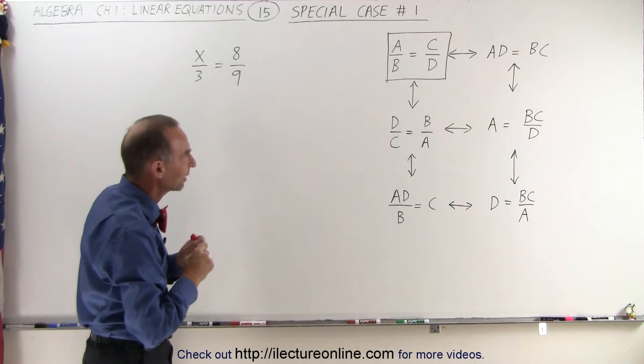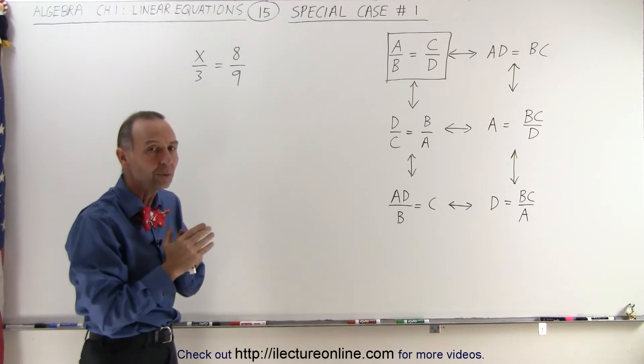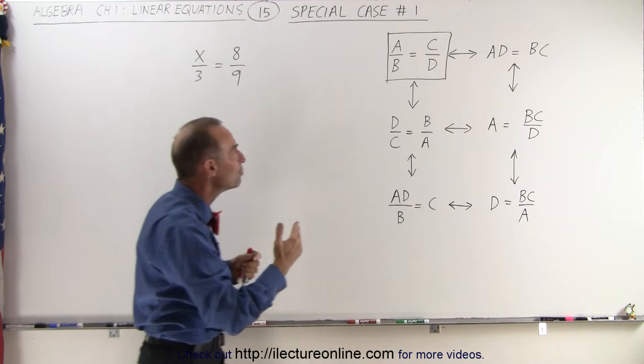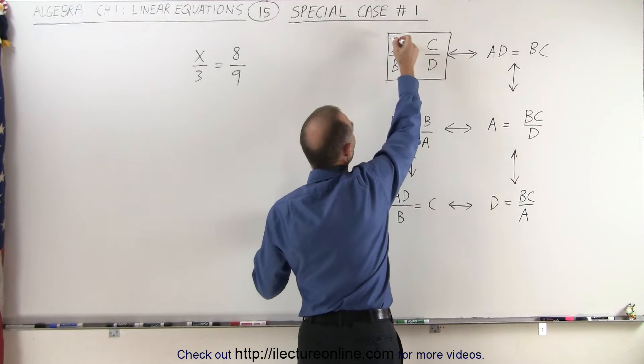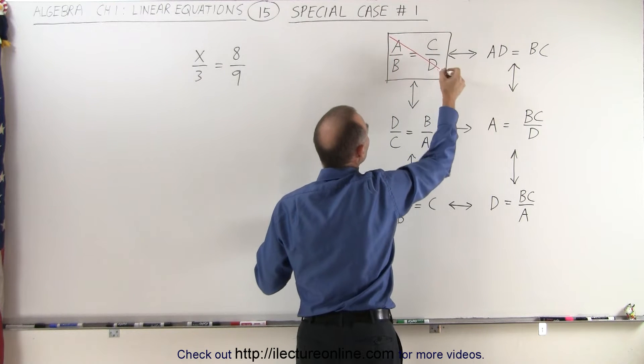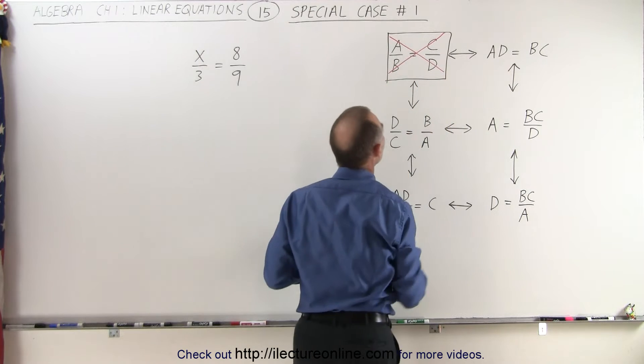Whenever we have a situation like that, we have two fractions that are equal to each other, we can literally move things across a diagonal line. So if you think about it, there's a diagonal line running from A to D, and there's a diagonal line running from B to C.